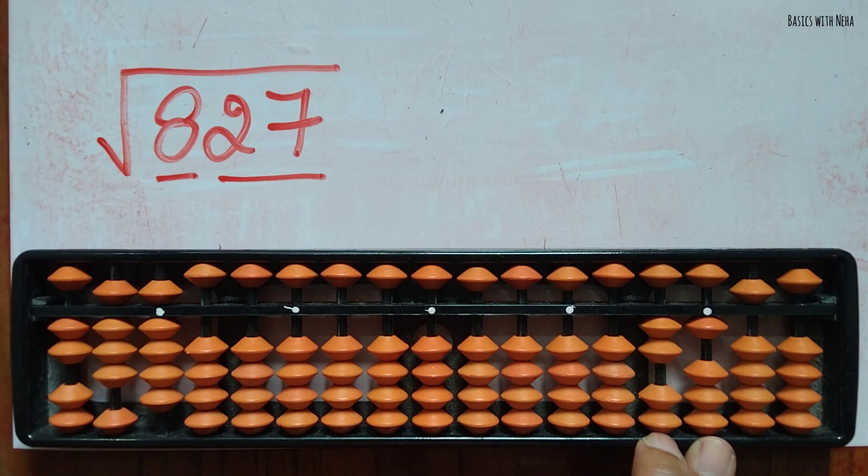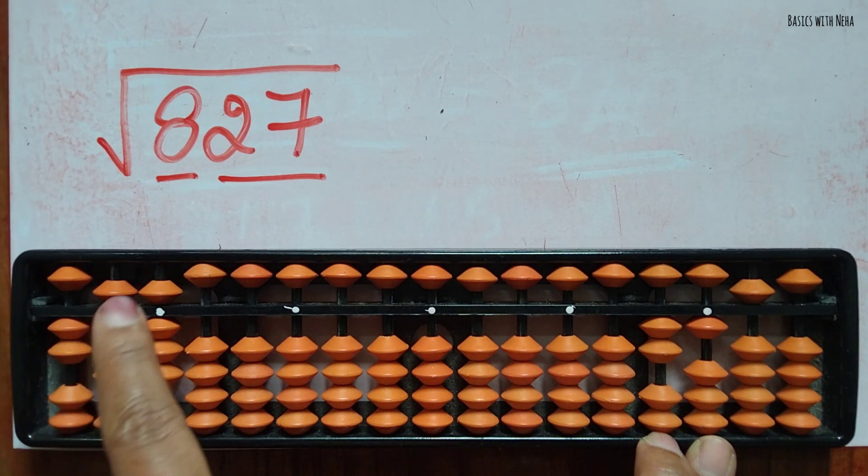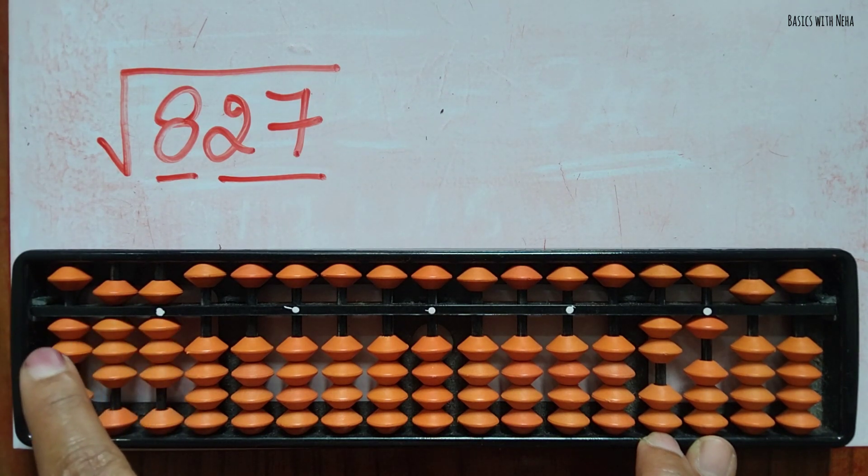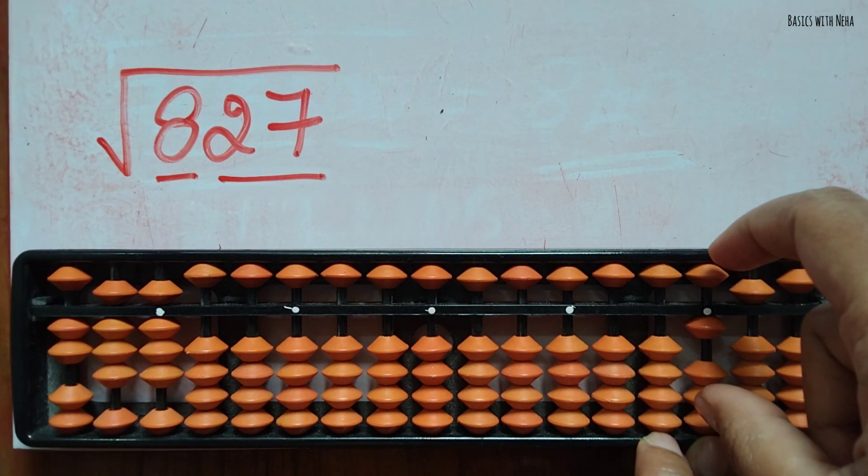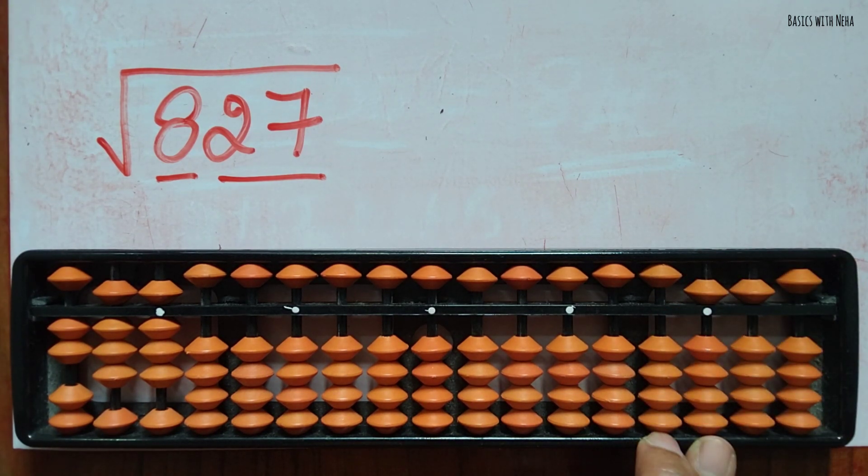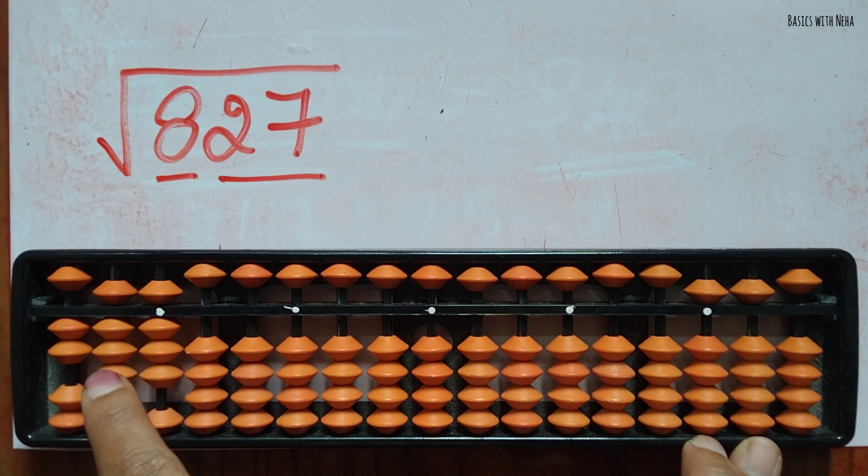I'm back to the same position. Now do it with 8, so 8 2s are, that is 2 8s are 16, plus 4. So I have subtracted 16 so we have to keep that in mind. Now I'm going to move here, it is 8 8s are 64.